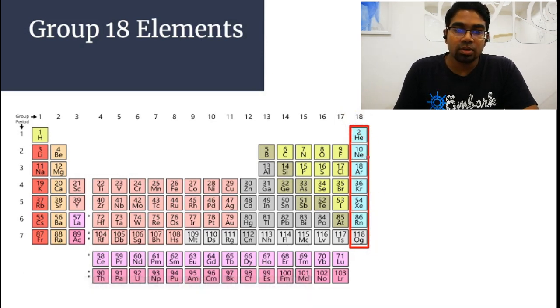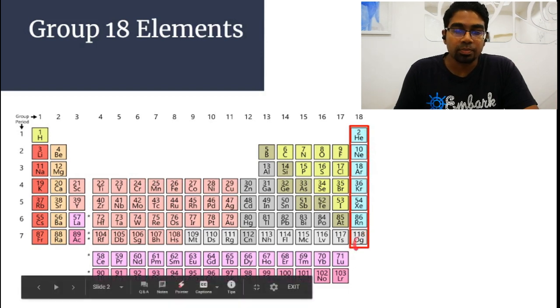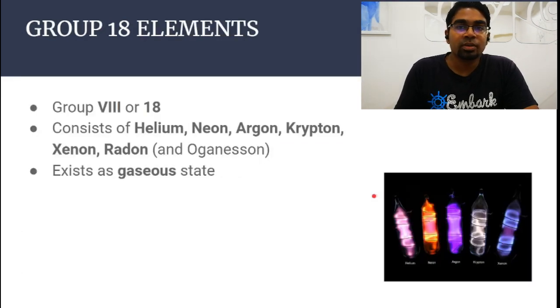We have helium, neon, argon, krypton, xenon, radon, and oganesson. This is a synthetic element you will not be looking at. We look at helium until radon, all of which exist in the gaseous state. Just a note for IG students taking IGCSE: they are also known as Group 8 (Roman numeral VIII) or Group 0.